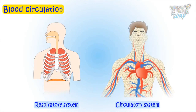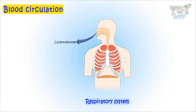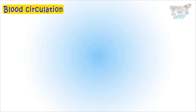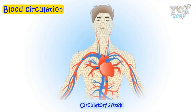Next, we will learn about the respiratory system to understand how deoxygenated blood changes to oxygenated blood in the lungs. So kids, today we learned about our heart, its chambers, the valves present in the heart, and the circulation of blood in our body.